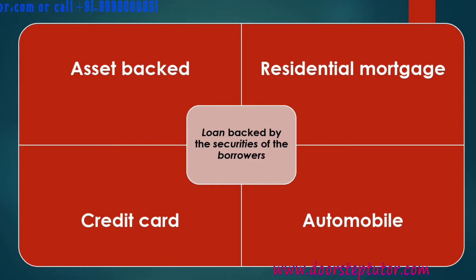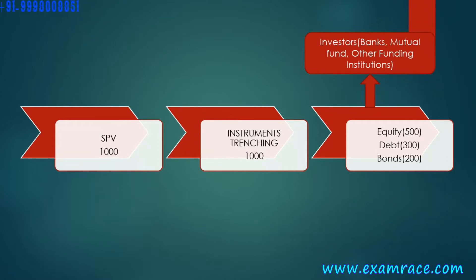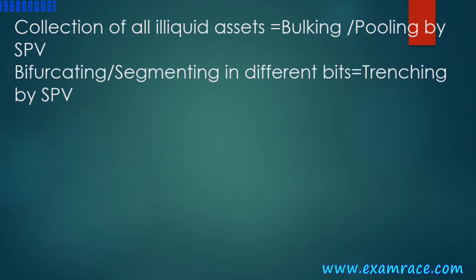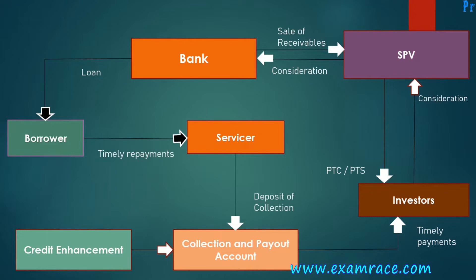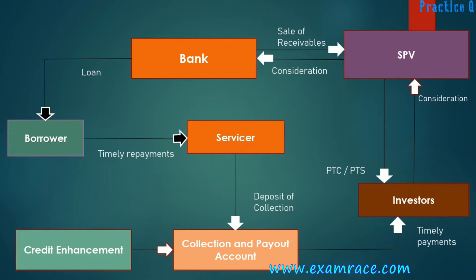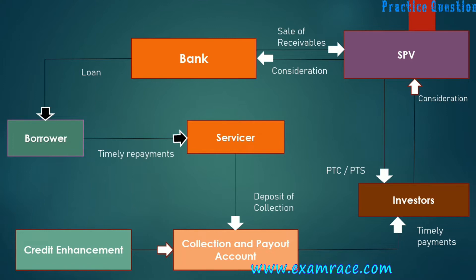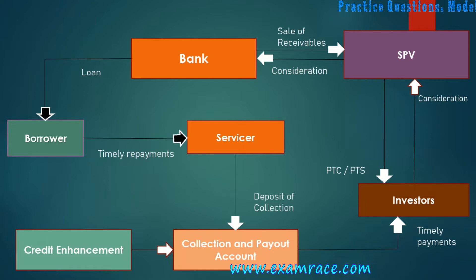The bank assembles and collects all these in the form of a bundle and sells it to the special purpose vehicle. The SPV purchases it for some consideration and pays cash to the bank. So the bank gets cash in hand on that date and the problem of running out of cash is solved. But a second problem arises: why will the SPV pay such a high amount of cash?